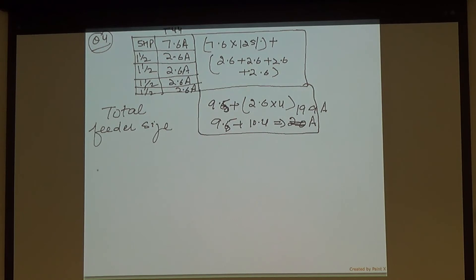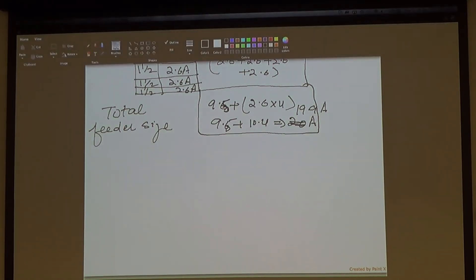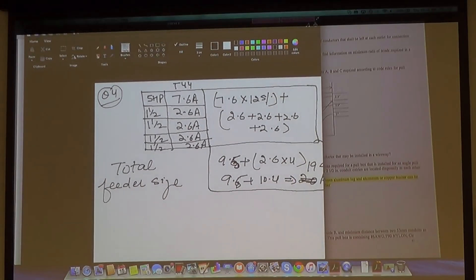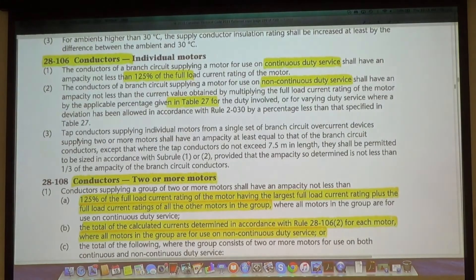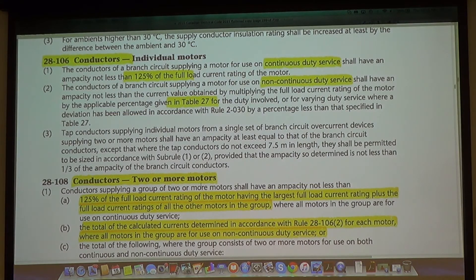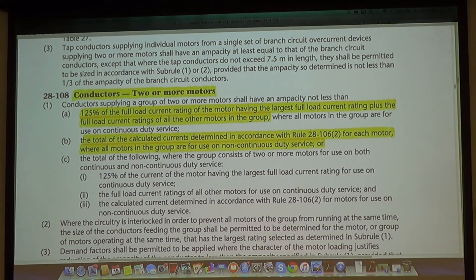So the second thing I'm going to teach you, so 28.108, if you go back to the rule, I'll put this on the screen one more time, but let's go highlight the stuff first. So here, for a continuous duty cycle, you're going to go sub rule A and highlight 125% of your largest FLA plus the FLAs of all other motors. That's what we just followed.